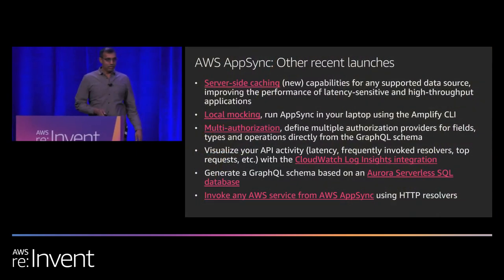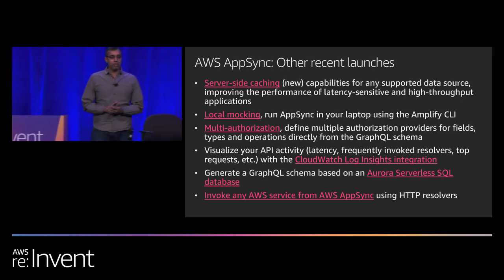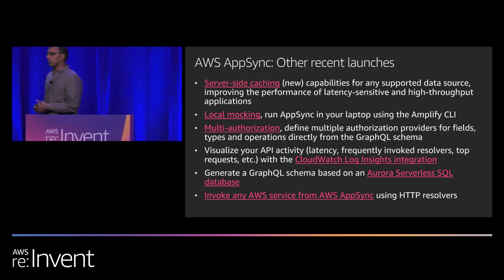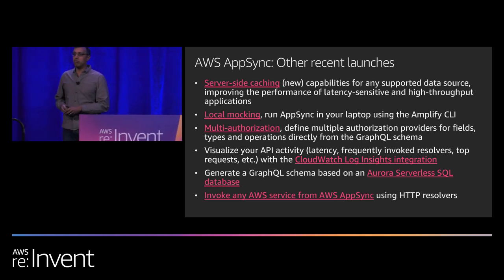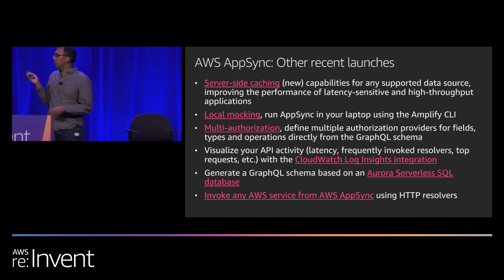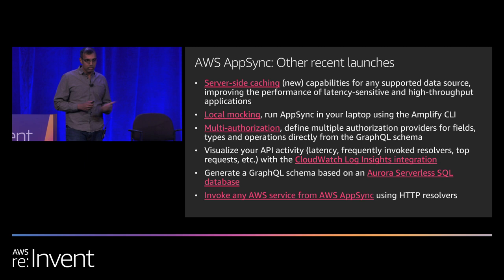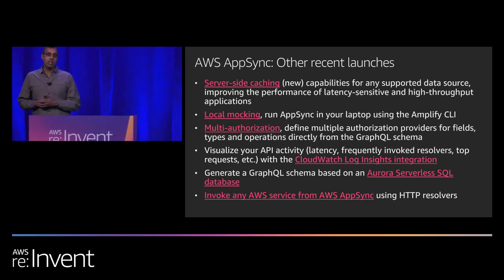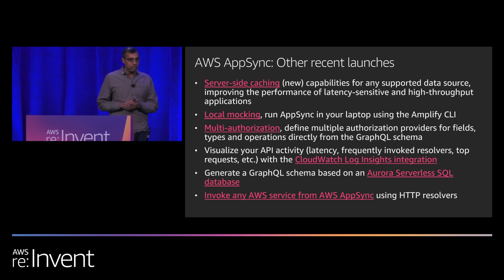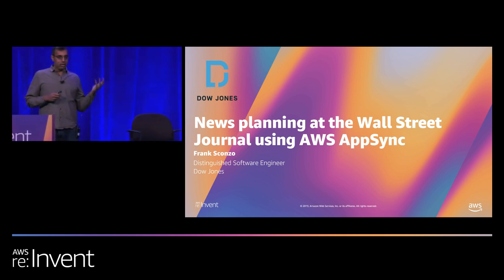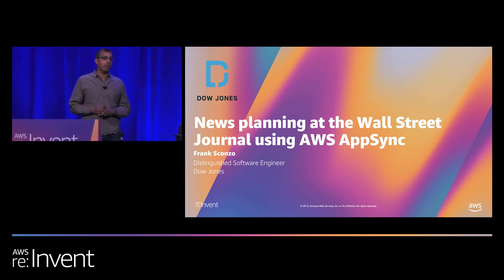Back to Mohit: a few other AppSync launches. Server-side caching launched earlier this month — a top request from customers — lets you serve requests from a cache instead of hitting downstream data sources, improving API performance and reducing load. Another feature launched earlier this year is multi-auth, which allows a single API to support multiple authorization mechanisms — for example, authenticating the end user for some use cases while allowing other requests to pass through unauthenticated. With that, introducing Frank Sconzo, Distinguished Software Engineer at Dow Jones, to talk about how the Wall Street Journal news planning app uses AppSync with multi-authorization.